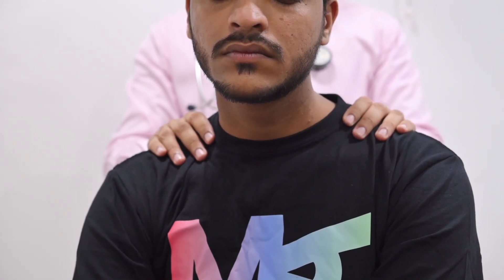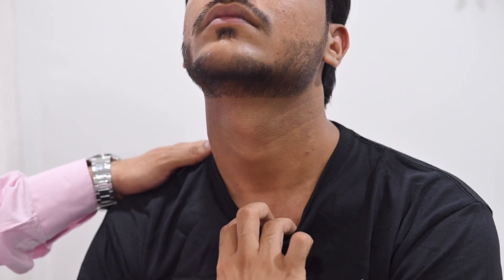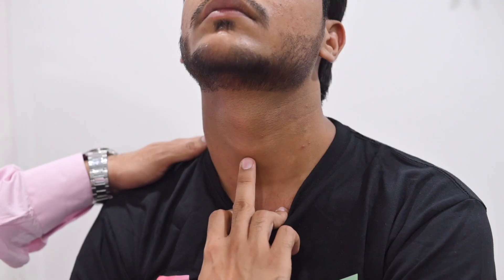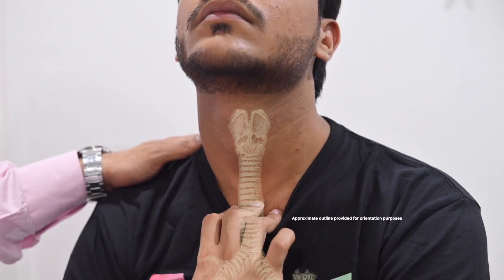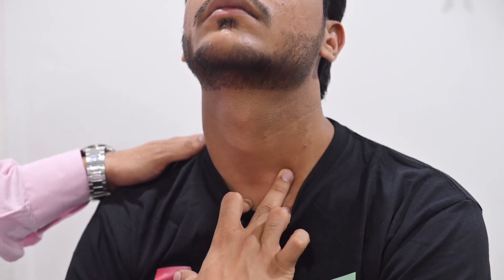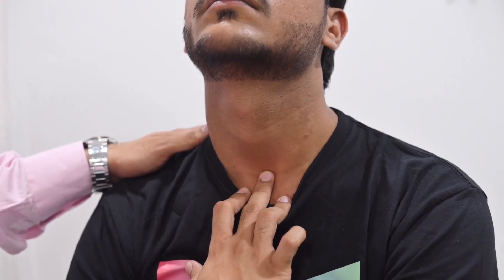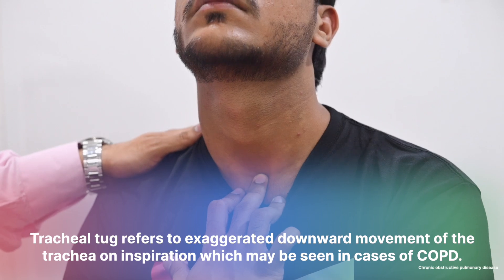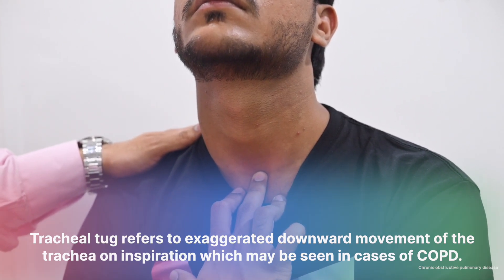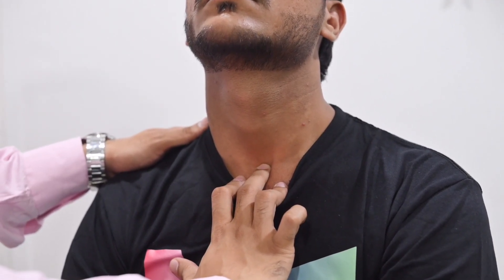That completes the lymph node examination. To check for tracheal deviation due to an enlarged thyroid mass, we use the three finger method. We put two of our fingers on the edges of the clavicles and use the middle finger to assess the downward medial location of the trachea. We can also assess the sides, looking if we can go between the trachea and the sternocleidomastoid. If you are able to do so, the trachea is midline. We can also assess for the cricosternal distance and a tracheal tug by asking the patient to inspire. If your finger is pulled inside and it causes a tug, this is a positive tracheal tug.